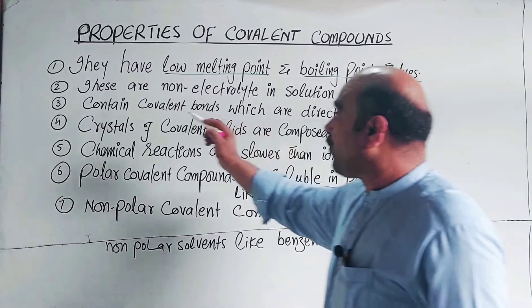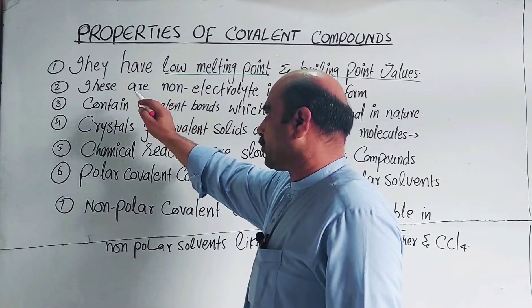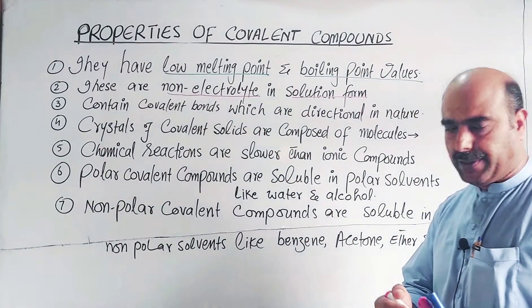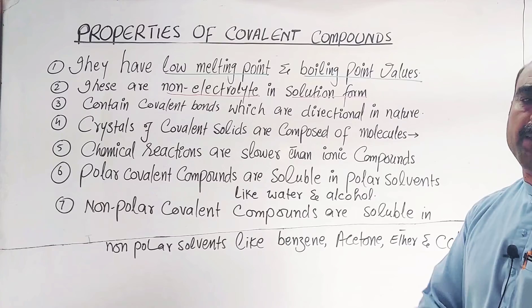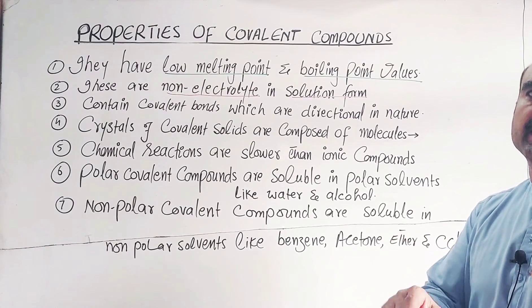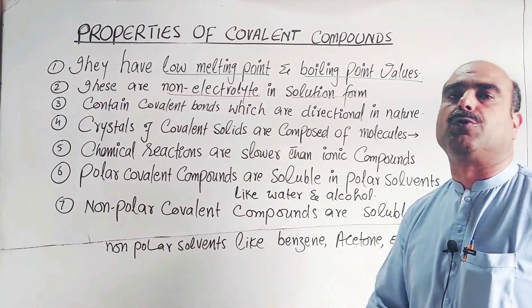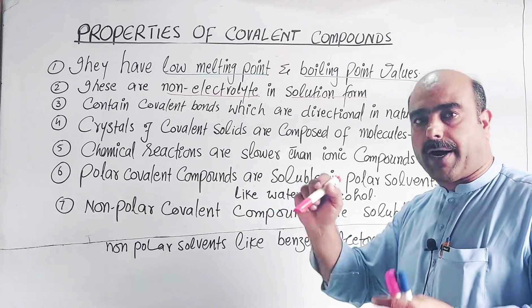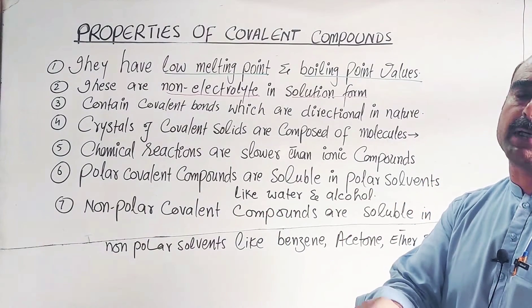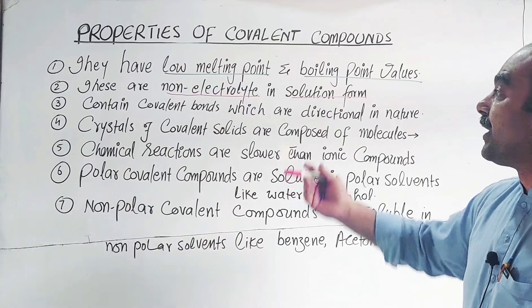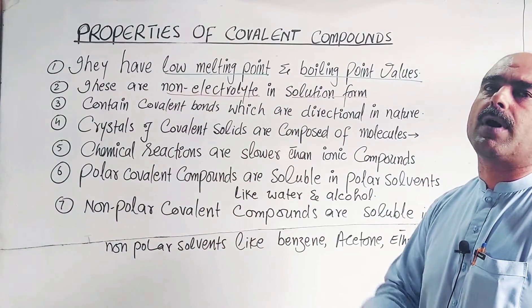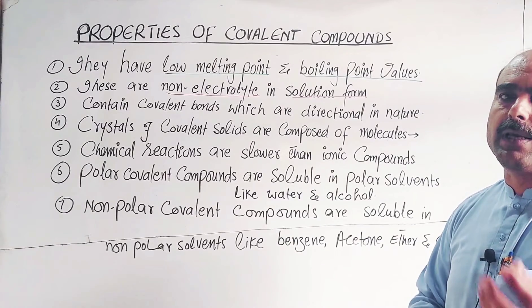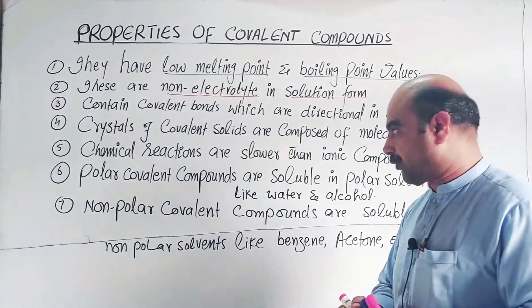Property number two: covalent compounds are non-electrolytes in solution form. Electrolytes are compounds which dissociate into positive and negative ions in water or in aqueous solution. Since covalent compounds do not ionize in water to produce positive and negative ions, they cannot pass current through solution — they are non-electrolytes.